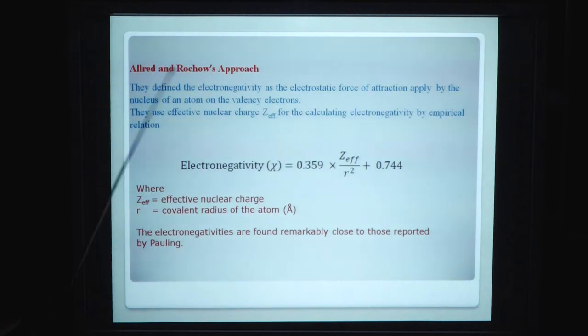Eldred and Roach approach. They define the electronegativity as electrostatic force of attraction applied by the nucleus of an atom on valence electrons. They use effective nuclear charge Z-effective for calculating electronegativity by empirical relation. Electronegativity chi equals 0.359 times Z-effective over R squared plus 0.744, where Z-effective is effective nuclear charge and R is covalent radius of atom in angstrom. The electronegativity values are found remarkably close to those reported by Pauling.